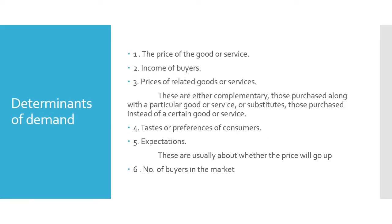The first determinant of demand is the price of a good or service. Based on the law of demand, when price increases the quantity demanded decreases and vice versa. People base their purchasing decisions on price. If all other things are equal, the exact quantity bought for each price level is described in the demand schedule, which is then plotted on a graph to show the demand curve.